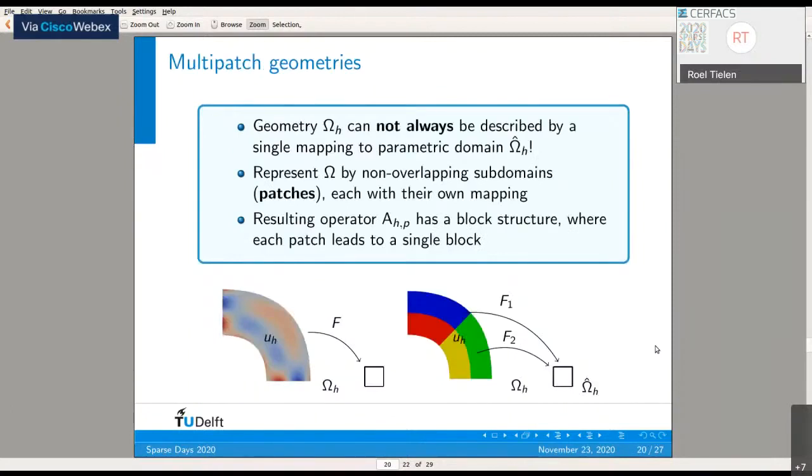I started the presentation explaining how basis functions are defined on the parametric domain and how we construct a mapping between geometry and parametric domain. You can imagine that sometimes geometries are so difficult that such a mapping does not exist—it's not bijective anymore. In that case, we divide our geometry omega into non-overlapping subdomains called patches, and each patch gets its own mapping. As a result, the operator, like a stiffness operator, has a block structure, and each patch leads to a single block.